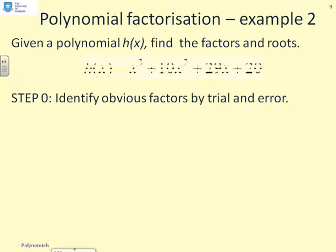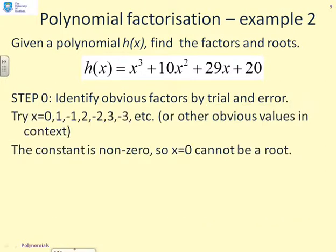Okay, different example. Given a polynomial h(x) below, find the factors and roots. So, x³ + 10x² + 29x + 20, and you might look at this and you think, golly, where do I start? It's not at all obvious. However, the examiner's not going to give it to you if something isn't obvious. So, the first thing to do is identify the obvious factors by trial and error, and that's quite important. You need to recognize some trial and error may be necessary, but it won't be overly onerous, or you wouldn't be asked.